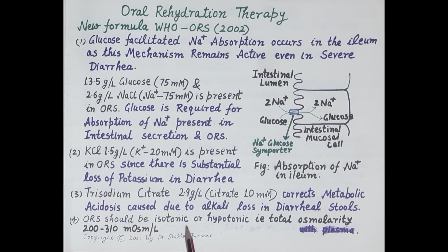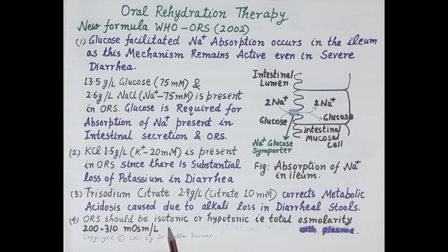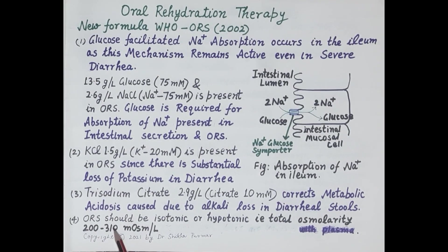The osmolarity of plasma is 285 milliosmol per liter. ORS should be isotonic or hypotonic — that is, total osmolarity should be between 200 to 310 milliosmol per liter. The osmolarity of ORS recommended by WHO in 2002, as discussed earlier, is 245 milliosmol per liter, which is within this range.